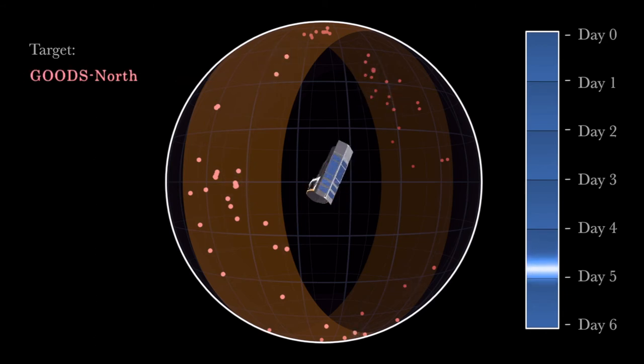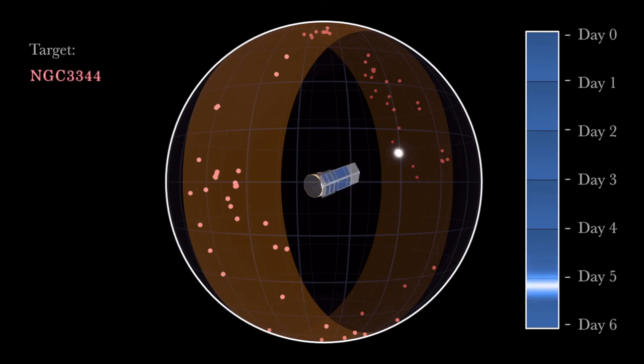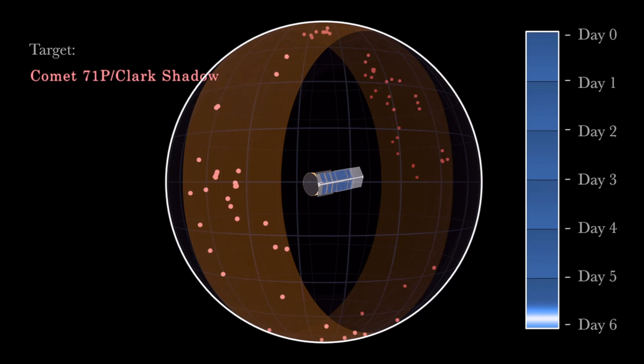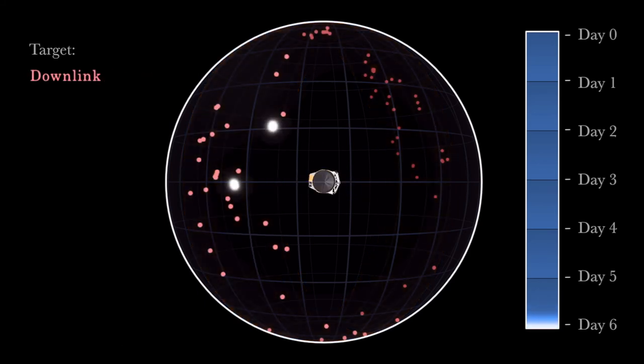Its only real limits are how much data it can store and how long it takes to transmit that data to Earth. During this run, Spitzer had been downlinking data and getting new instructions about once a day. But over 90% of its time is devoted to efficiently studying the universe.